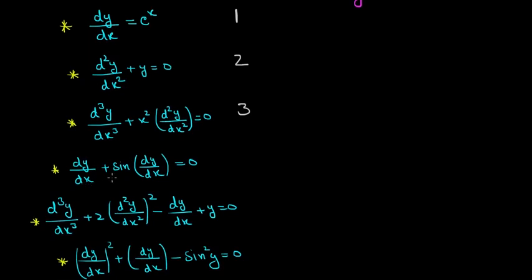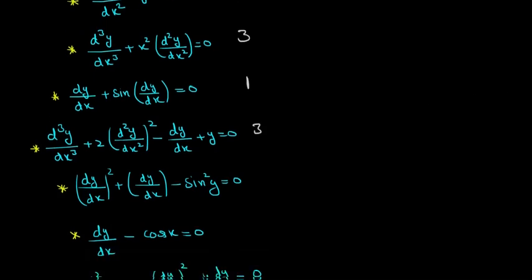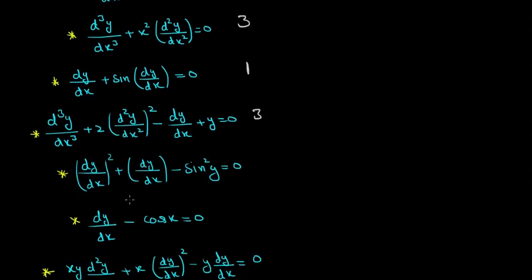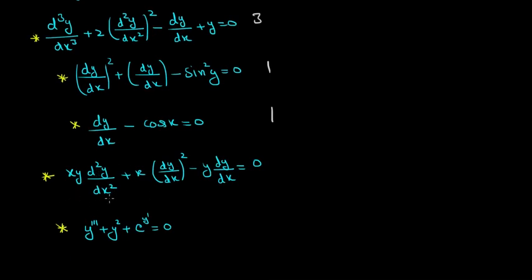Now tell me: what is the order of this differential equation? If you said 1, then you are right. What is the order of this one? Yes, it is 3 because the highest derivative is 3. For this differential equation, you don't have to look at the square — you have to look at the highest derivative. Its order is 1. The order of this differential equation is also 1, and the order of this one is 2.